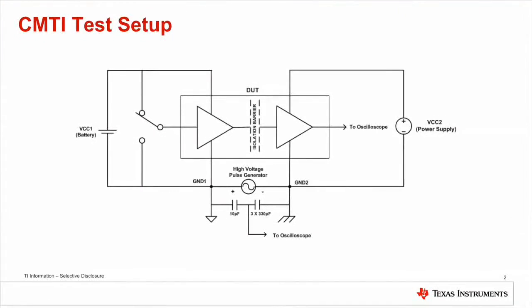At Texas Instruments, we measure CMTI using a high-voltage pulse generator that's able to generate fast transients. This block diagram shows our test setup. In order to isolate the input side of the isolator from the earth ground, a battery is used to power VCC1. The output side VCC2 is powered by a power supply.